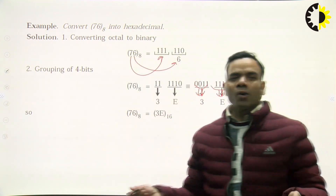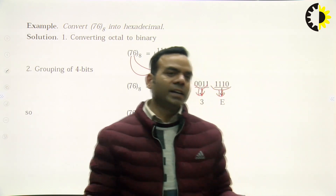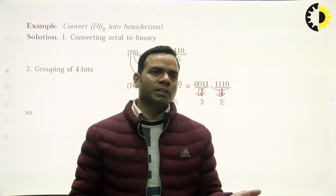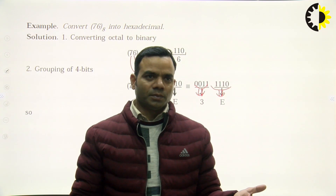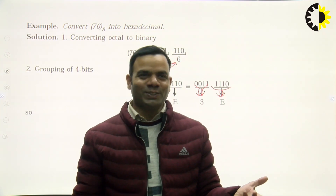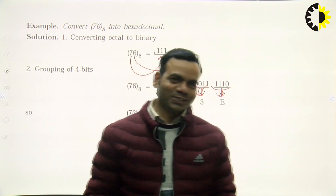So it is easy to convert any number from any number system to any other number system. Just remember: make groups of 4 bits when dealing with hexadecimal, and groups of 3 bits when dealing with octal. This is what we have discussed today. Thank you.